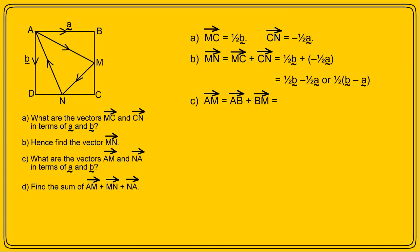Now in part C, we first need to find the vector AM. This is simply vector AB plus vector BM, which must be a plus a half of b. Similarly, vector NA is vector ND plus vector DA, and a moment's thought will tell you that this must be minus a half a minus b.